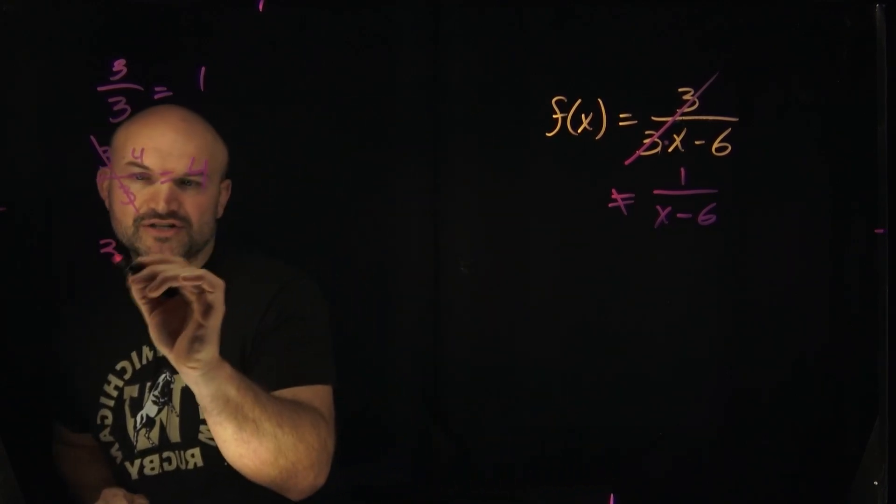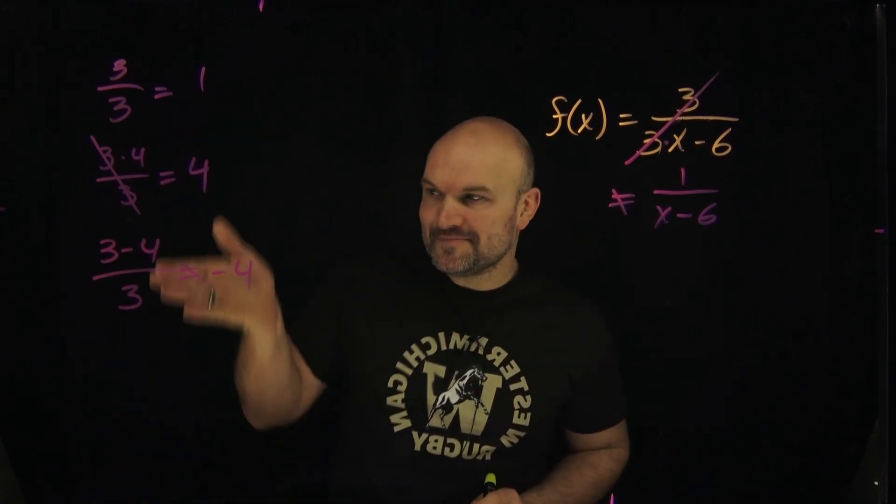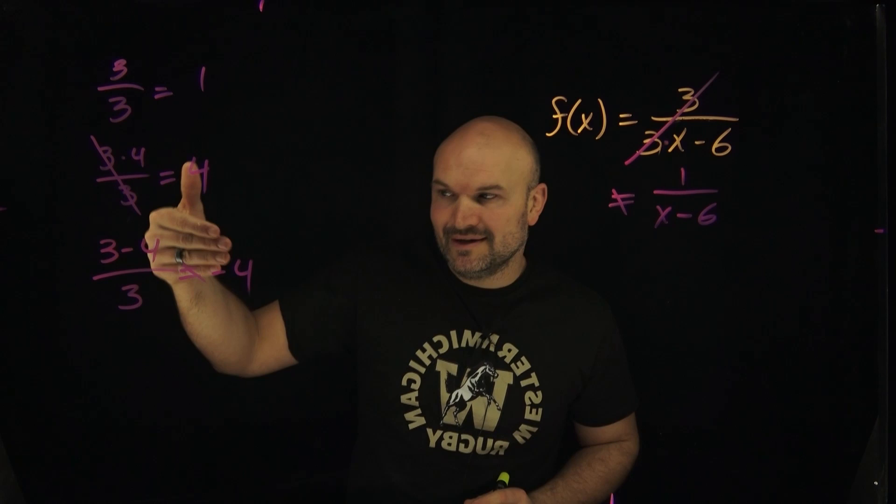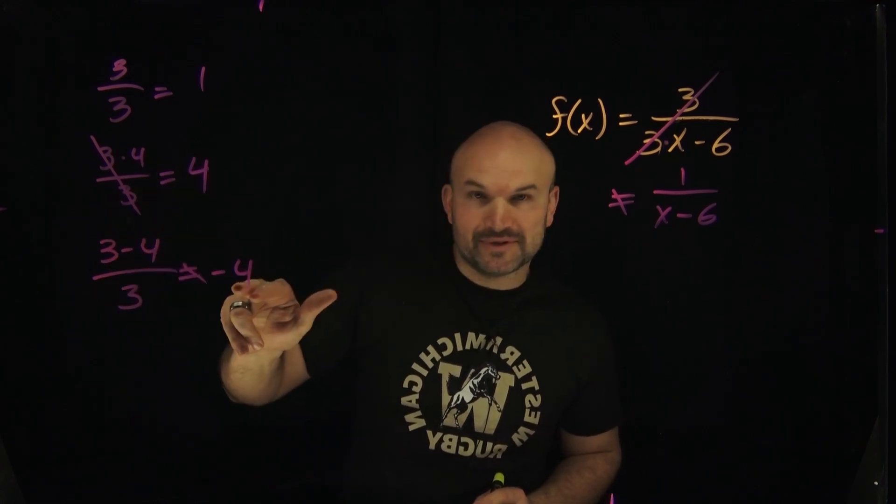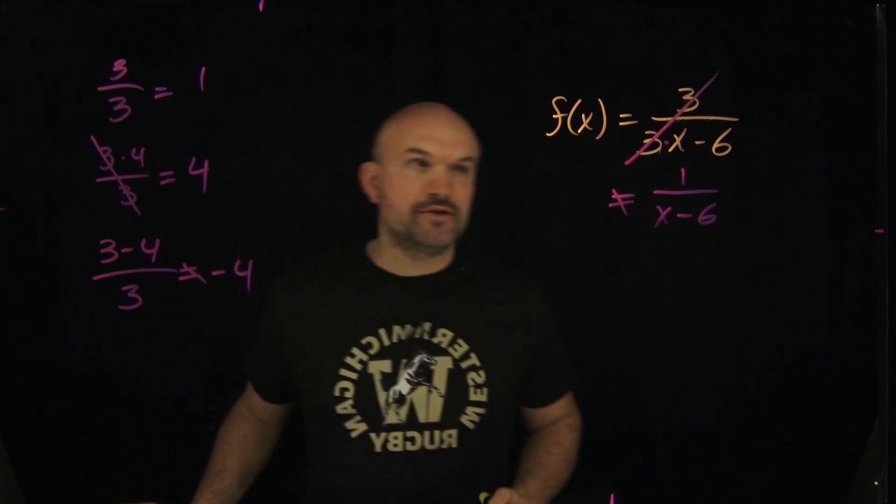However, if you have subtraction, the division property does no longer work. 3 minus 4 is negative 1. Negative 1 over 3 is not equal to negative 4. So we have to be careful. We cannot go ahead and just divide out the 3s.